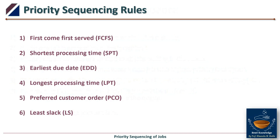There are several priority sequencing rules. Rule number one is First Come First Serve, which is the default rule — the order registered earliest is given the highest delivery priority. Rule two is Shortest Processing Time, which says the job with minimum processing time should be processed first. Rule three is Earliest Due Date: sometimes rush orders have committed deadlines irrespective of the order date.